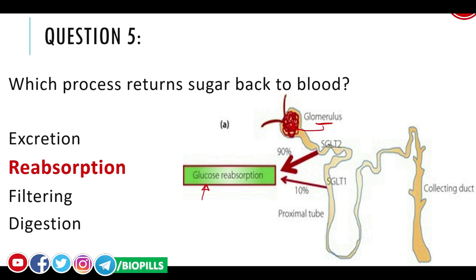It is called selective reabsorption because not all of the filtrate is retained — only important substances like glucose are reabsorbed back into the blood. All of the glucose — 90% via SGLT2 and the remainder via GLT1 — is completely reabsorbed and returned to the body in the convoluted tubules.